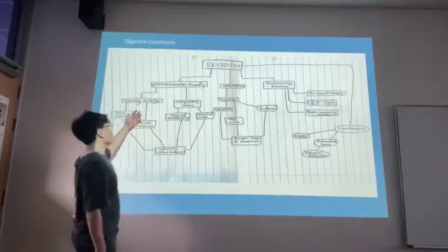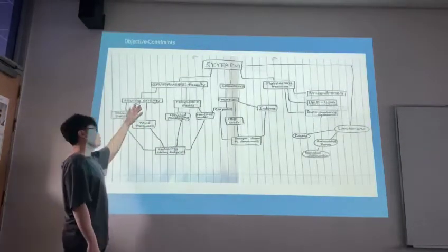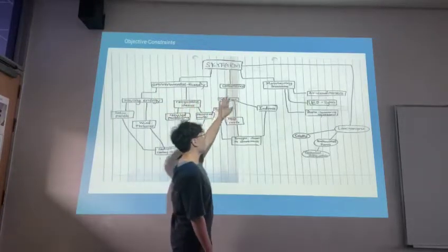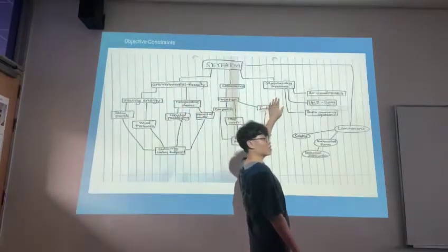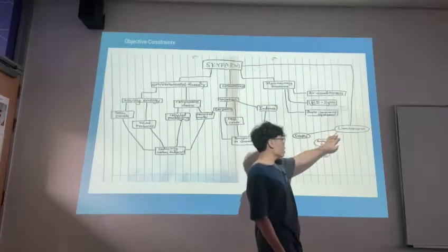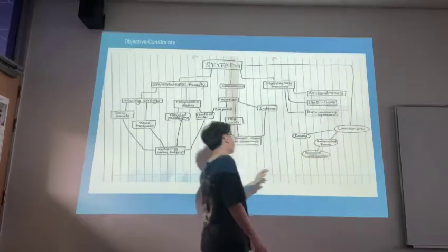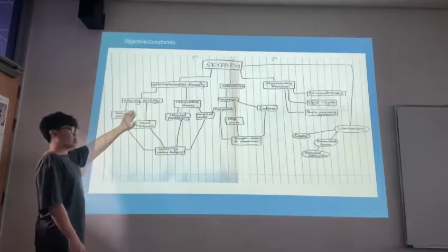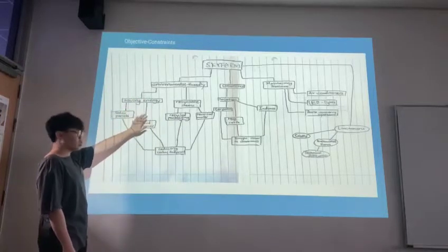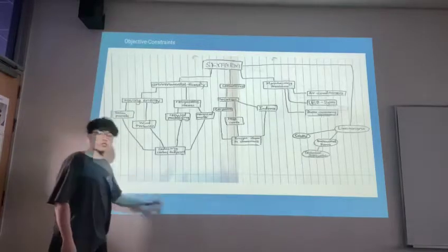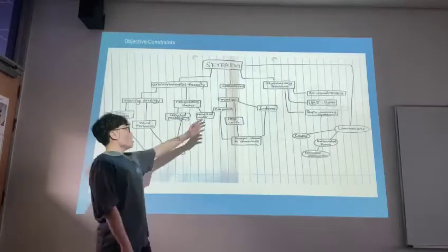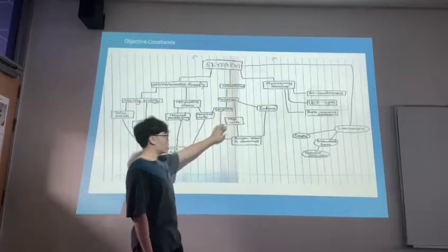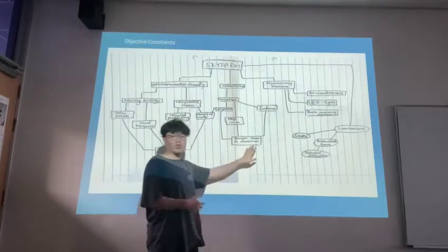Here is our objective mind map, as you can see. It's environment-friendly, convenience, and maintaining freshness as our objectives, and the limitations are the constraint part. As for the environmental-friendly part, we are targeted at saving energy. We decided to use solar panels to reduce carbon footprints, and for the convenience part, we decided to go with cup-ups as it brings the produce closer to consumers.